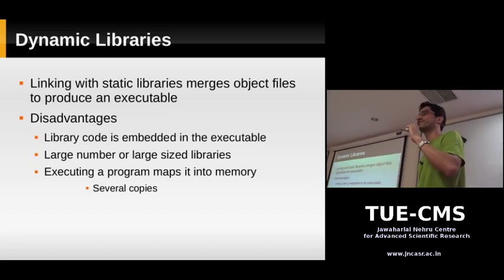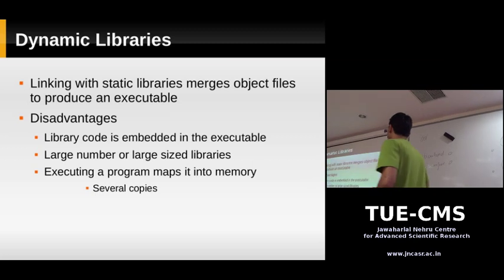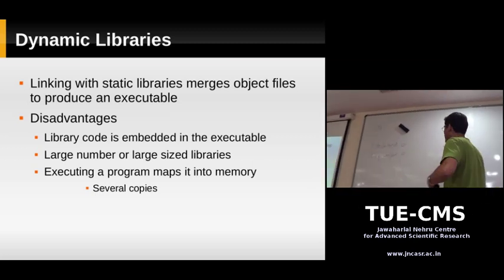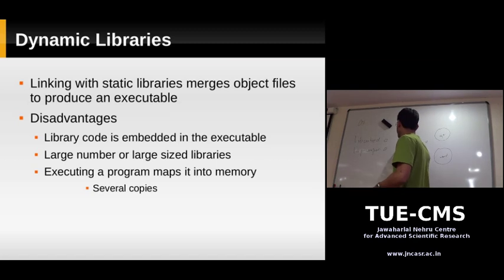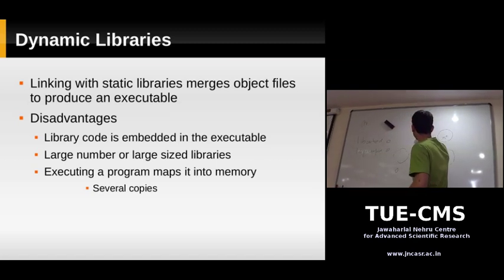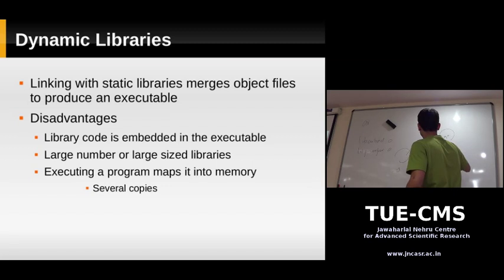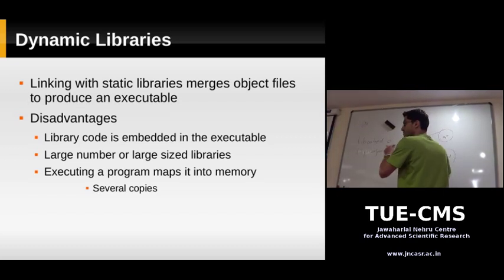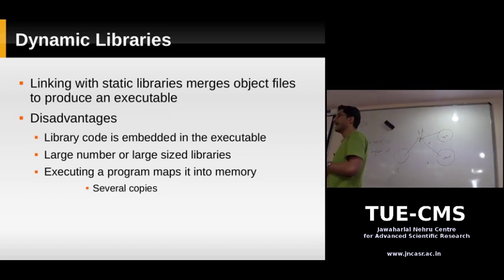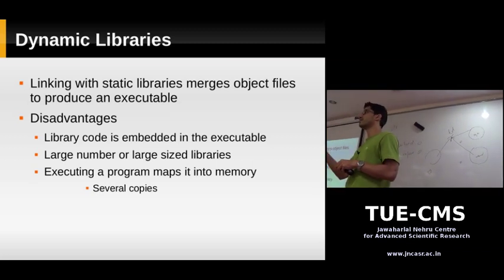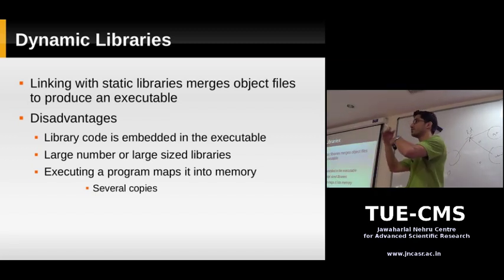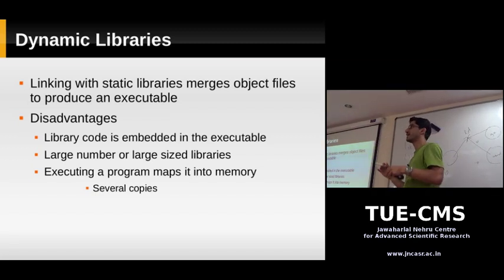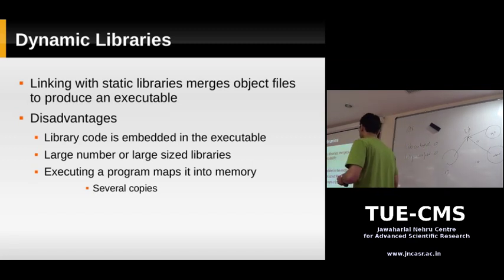Now we'll talk about some disadvantages of static libraries. When you have a static library during the linking stage, the linker merges all these object files together into a single executable file. The actual code from all these objects is merged together and it takes care of dependencies — ensuring that if one object file calls a function in another, the addresses match.